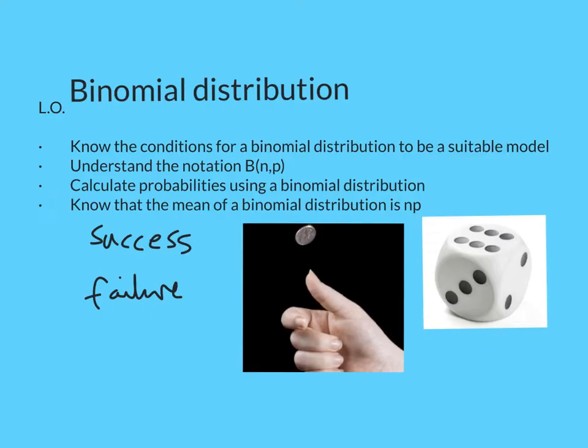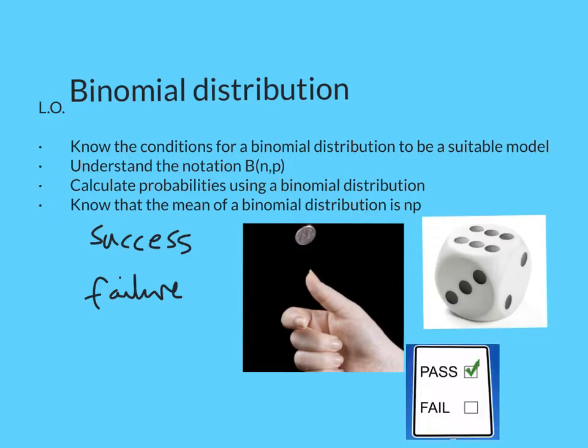So 6 is success and 1, 2, 3, 4, 5 are failure. Or in a test, you could either pass or fail — pass would be success and fail would be failure. So it's binomial: 2 options. There needs to not only be 2 options, but these need to be independent with a fixed number of trials.